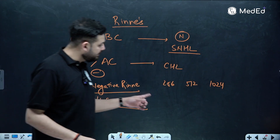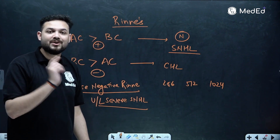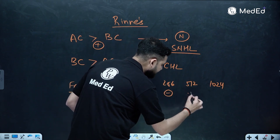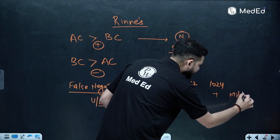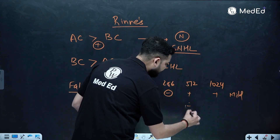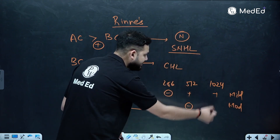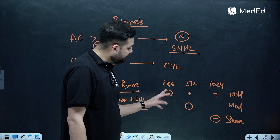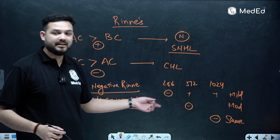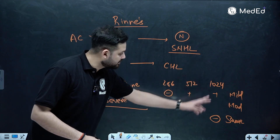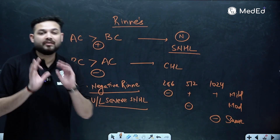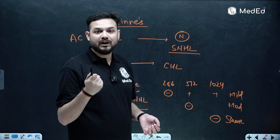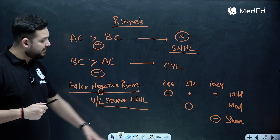According to the tuning fork frequency, we can decipher how much hearing loss the person has. If the patient perceives negative Rinne's at 256 Hz but both 512 and 1024 are positive, we call that mild hearing loss. If negative Rinne's is also at 512 Hz, it becomes moderate. If negative Rinne's is even at 1024 Hz, it becomes severe. This way, we can roughly estimate the hearing loss of that particular person. The tuning fork is a very important tool for ENT surgeons and neurologists alike.